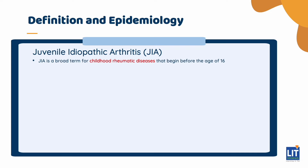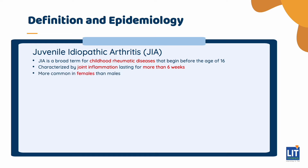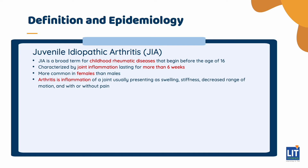This is a broad term of childhood rheumatic diseases that begin before the age of 16. It is characterized by joint inflammation that lasts for more than 6 weeks. If onset is after 16 years, it is called adult-onset Still's disease. It is more common in females than males. By definition, arthritis is inflammation of a joint usually presenting as swelling, stiffness, decreased range of motion, and with or without pain.